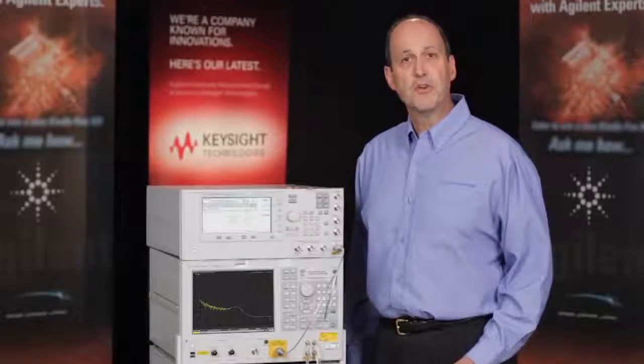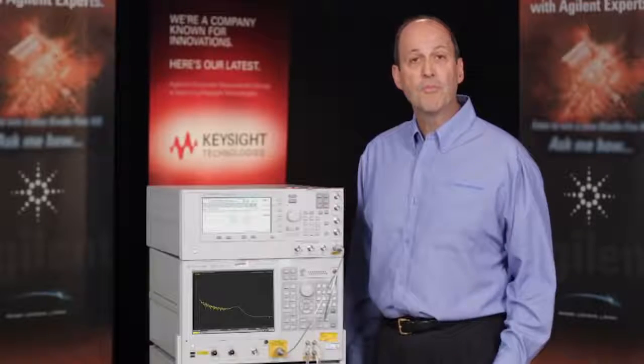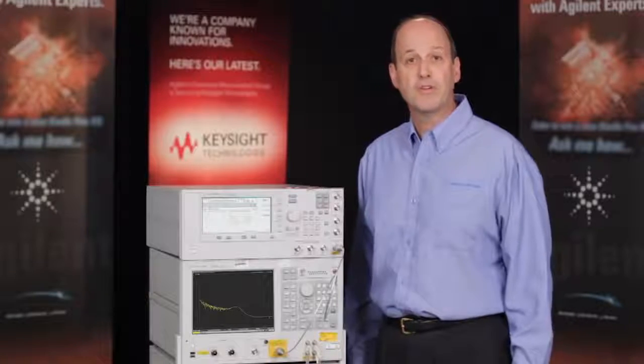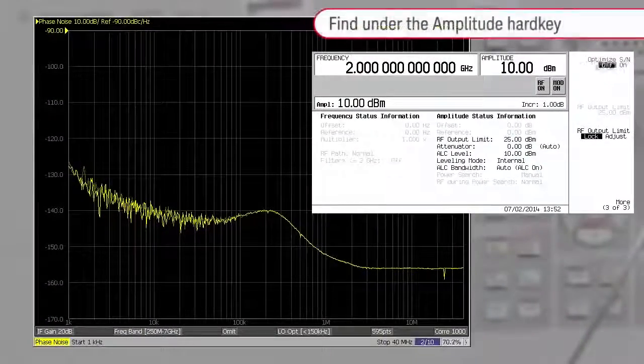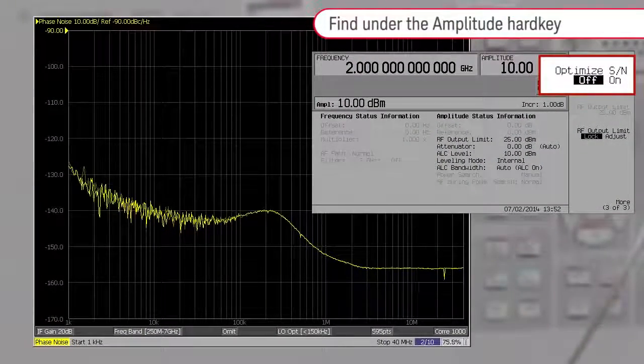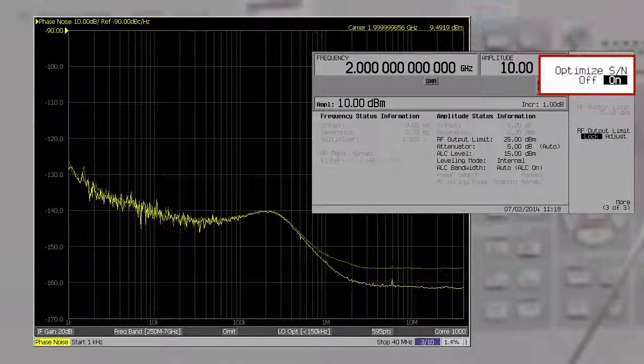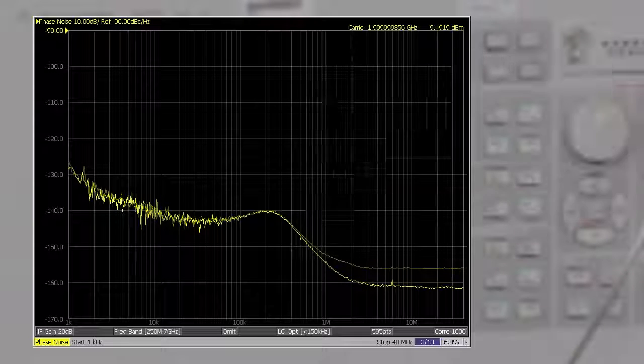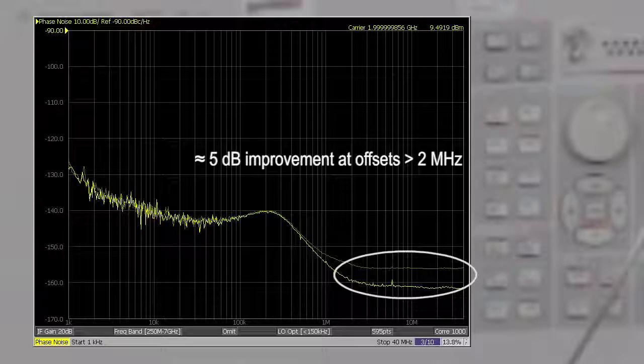We also have a signal to noise optimization mode that can improve broadband noise at greater than 1 megahertz offsets from carrier. You can find this under the amplitude key. By switching to optimize signal to noise, you can see about 5 dB improvement at offsets greater than 2 megahertz.